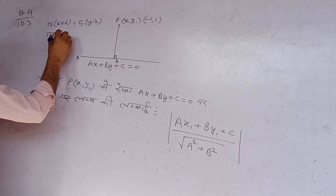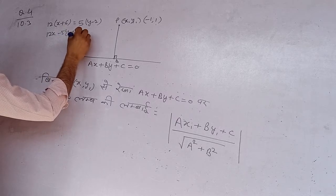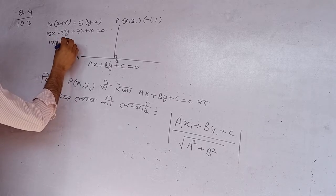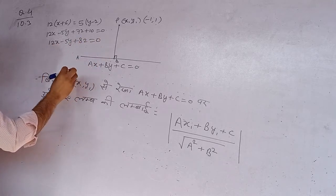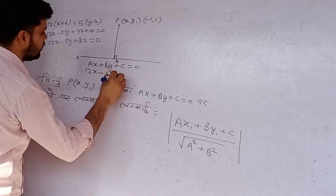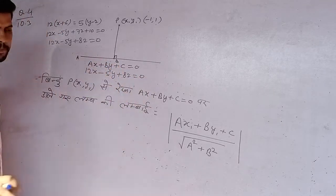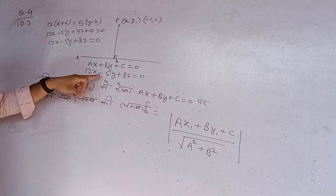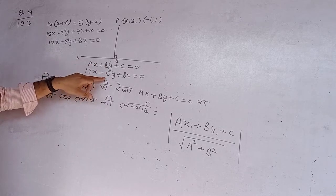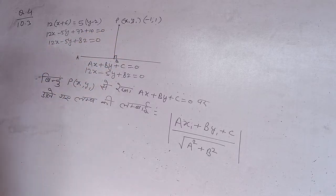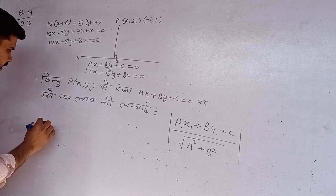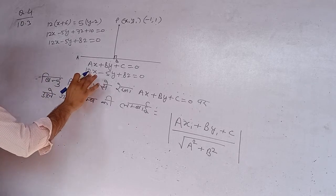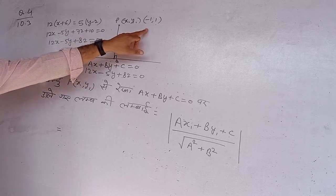12x − 5y + 72 + 10 = 0, तो रेखा का समीकरण 12x − 5y + 82 = 0 है। −5y उधर आया, बराबर के उधर लाए तो plus हो गया। तो यह रेखा (line) का समीकरण है, और यह बिंदू है हमारा। अब इस बिंदू से इस रेखा पर डाले गए लंब की लंबाई — उस सुत्र में मान रखेंगे। सबसे पहला काम: x और y की जगह हम यह बिंदू रख दें, x1 = −1, y1 = 1।